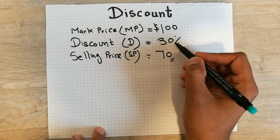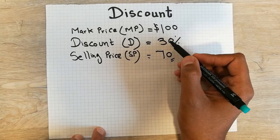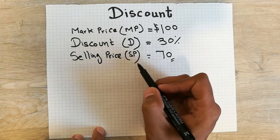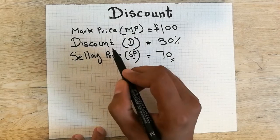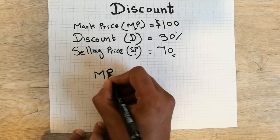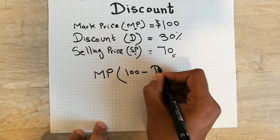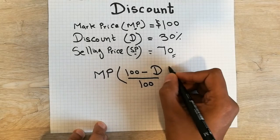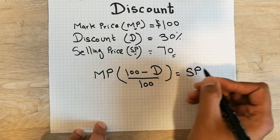Mark price (MP) is directly related to selling price (SP). Now we will move to the formula for discount. The formula is: MP × (100 − D) ÷ 100 = SP, where D is the discount percentage.